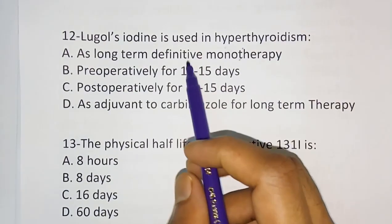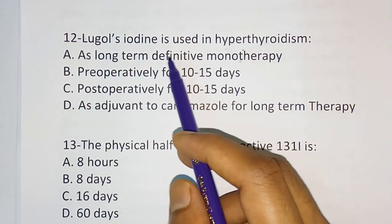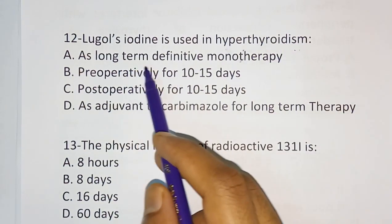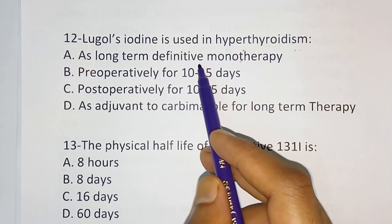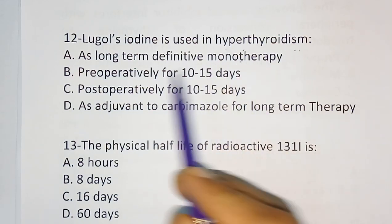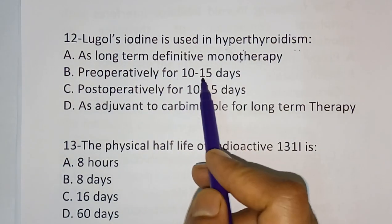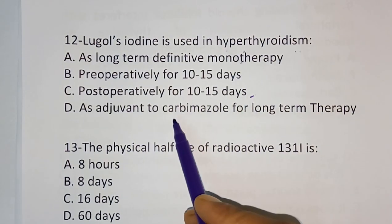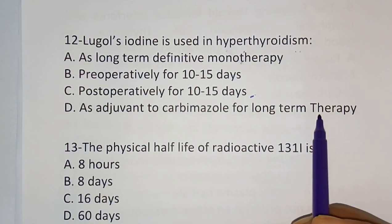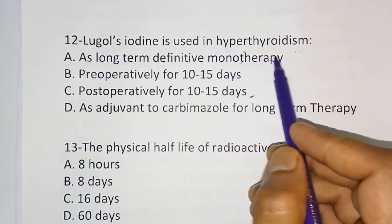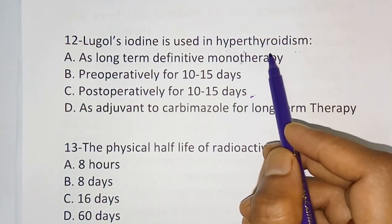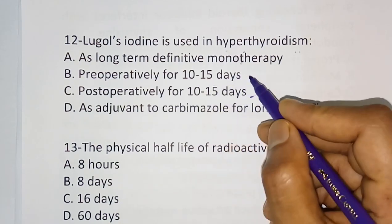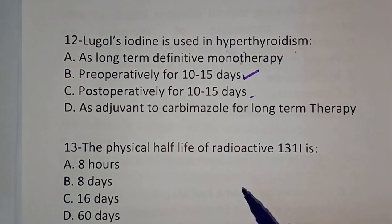Question number twelve: Lugol's iodine is used in hyperthyroidism — options are: as long-term definitive monotherapy, preoperatively for 10 to 15 days, postoperatively for 10 to 15 days, or as an adjuvant to carbimazole for long-term therapy. The correct answer is: preoperatively for 10 to 15 days.